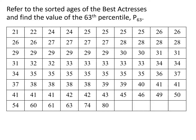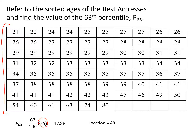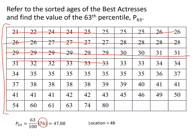Let's do one more. For the 63rd percentile, we calculate 63 over 100 multiplied by 76 — where 76 is the total number of values in the table. That gives us 47.88, and we round that up to the next highest integer, which is 48. With 10 per row, we count through the data to location 48. The 63rd percentile equals 35.